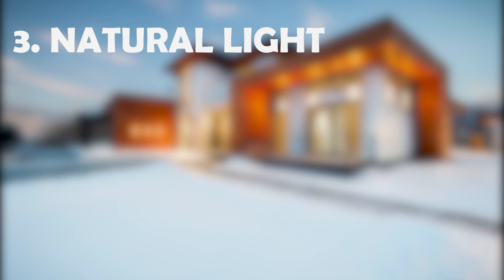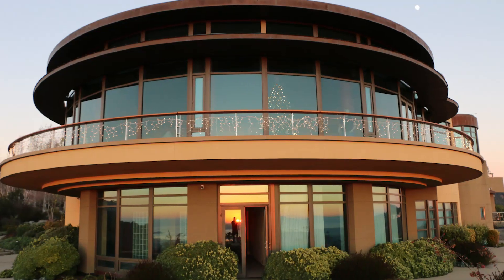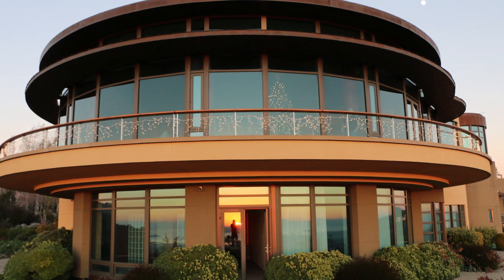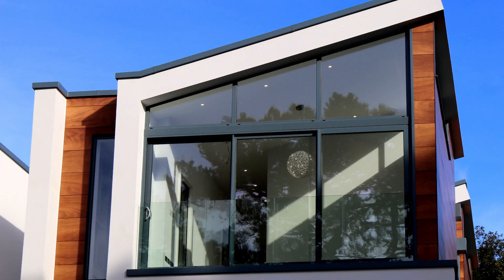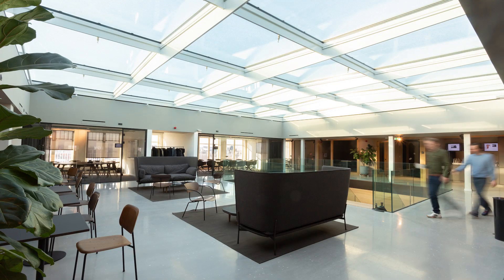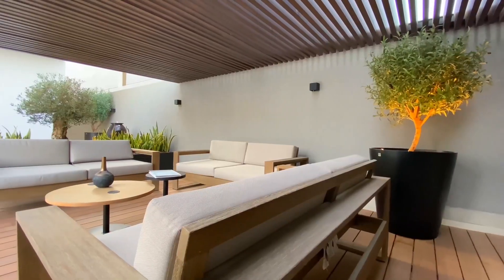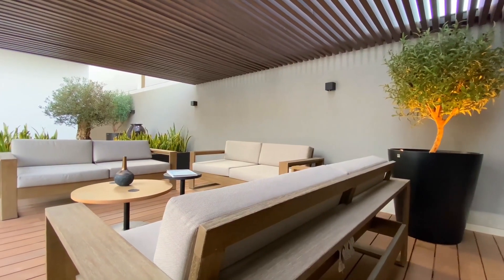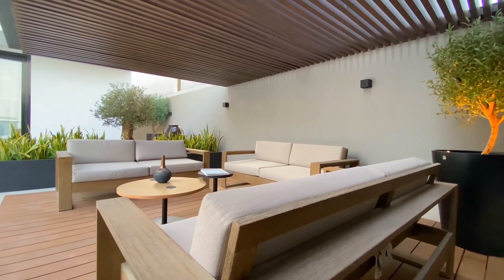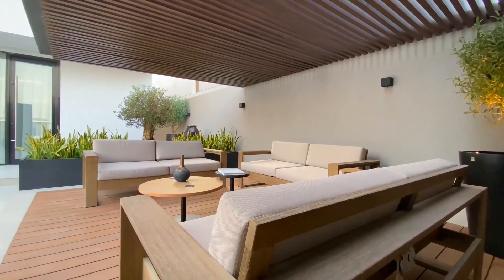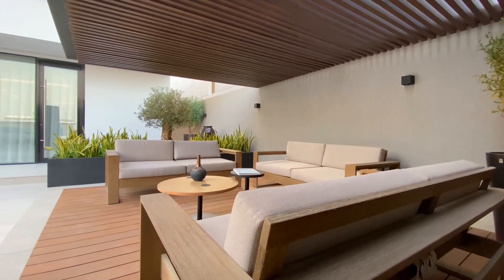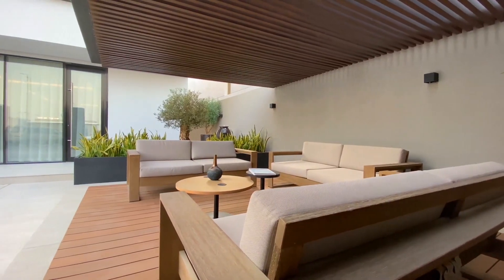Maximize natural light. Natural light is a key element of modern design. Incorporate large windows, skylights and glass doors into your exterior design to maximize natural light and create a bright, airy feel. This can also help to connect the indoor and outdoor spaces, blurring the lines between the two.